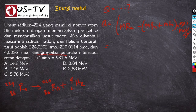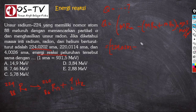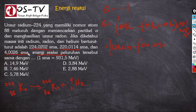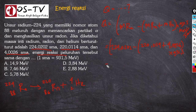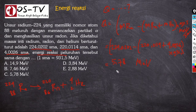Kita masukkan nilai-nilainya: massa radium = 224,0202 SMA, massa radon = 220,0114 SMA, massa helium = 4,0026 SMA. Q = (224,0202 − (220,0114 + 4,0026)) × 931,5 MeV/SMA. Kalau perhitungan ini diselesaikan, diperoleh nilai sebesar 5,78 MeV. Jawaban dari soal ini adalah C.